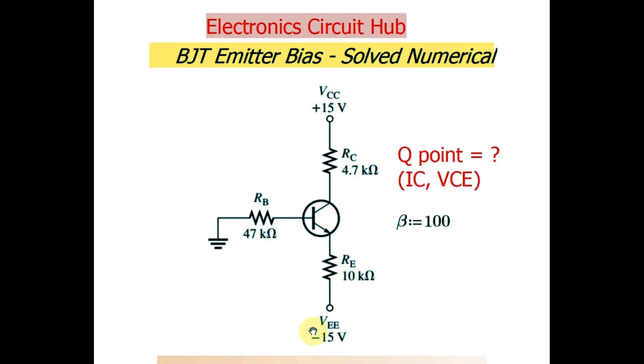The BJT base is connected via one resistance RB and it goes to ground. Your emitter is connected via RE resistance and there is also one negative power supply, minus 15 volt. Your collector is connected via RC and it goes to the positive power supply plus 15 volt. This is the basic circuit for emitter bias.